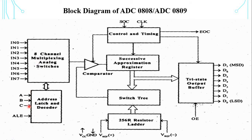The address lines select the channel. If ABC = 000, IN0 is selected. For 001, IN1 (channel 1) is selected. For 010, channel 2 is selected. For 011, channel 3 is selected. For 100, channel 4 is selected. For 101, channel 5 is selected. For 110, channel 6 is selected. For 111, channel 7 is selected.